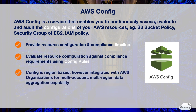AWS Config is a regional service. Each region has a different config dashboard, where you can view the configuration timeline of resources in that region. However, AWS Config is integrated with AWS Organizations. It allows you to centralize auditing and governance, with multi-account and multi-region data aggregation.